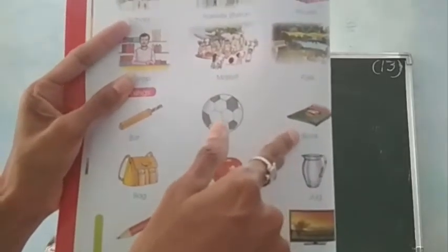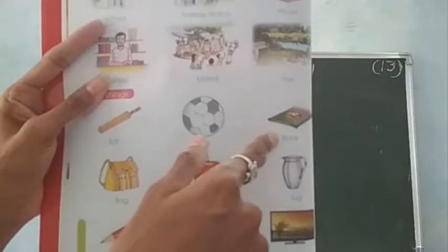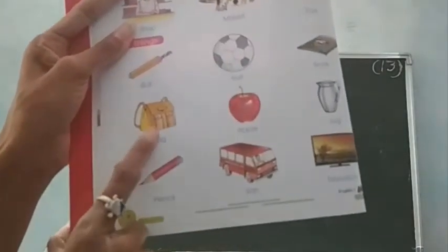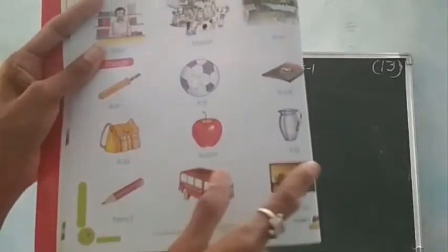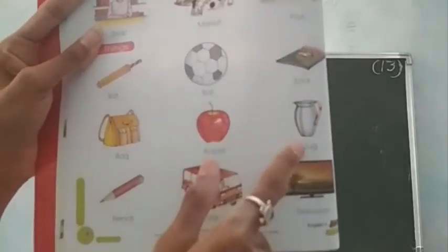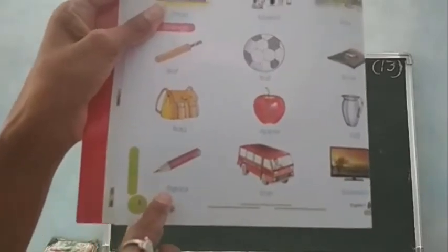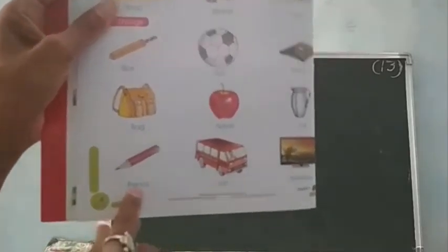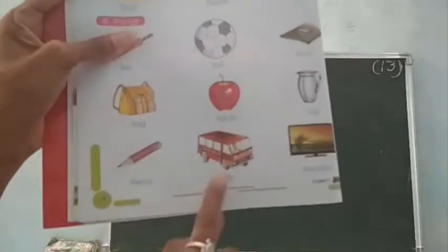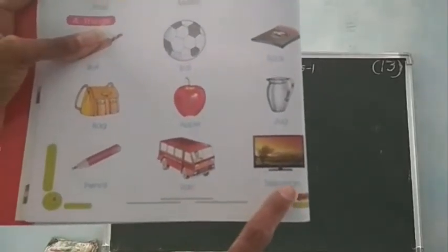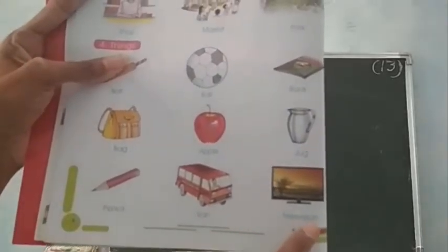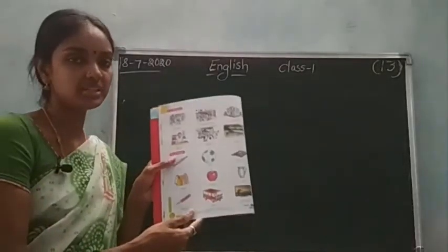Jug, J-U-G. Pencil, P-E-N-C-I-L. Van, V-A-N. Television, T-E-L-E-V-I-S-I-O-N. Okay children, these are some things. All of you have these kinds of things in your homes. So many things are there.